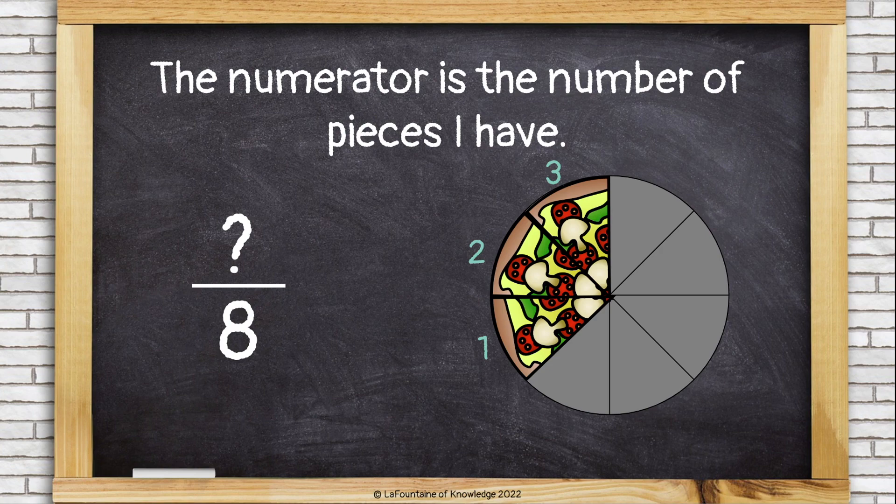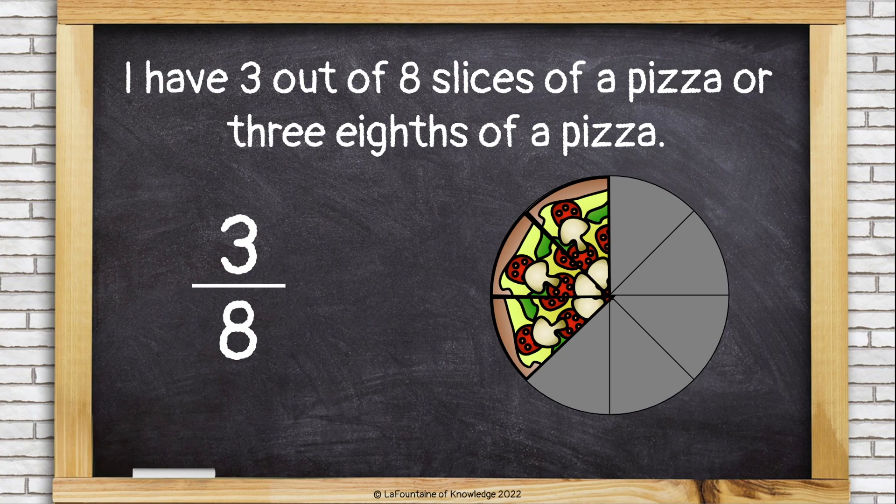The numerator is the number of pieces I have, or the number of pieces I'm considering or thinking about. In this example, that's three. I only had three pieces of pizza left. So I have three out of eight slices of a pizza, or three eighths of a pizza.